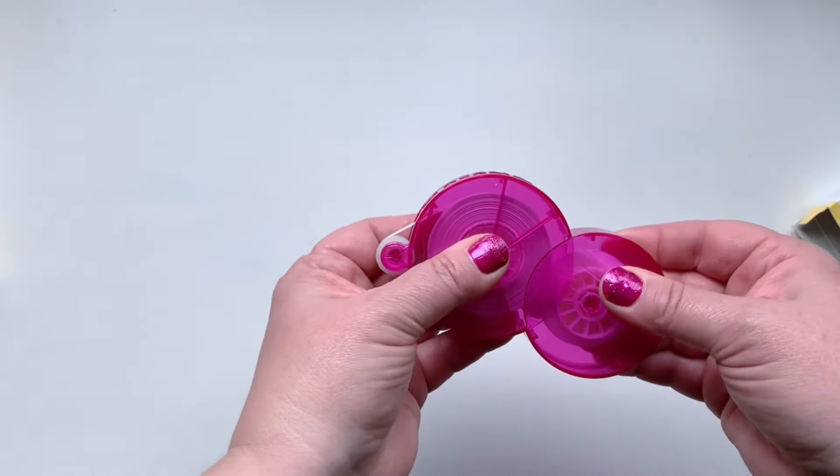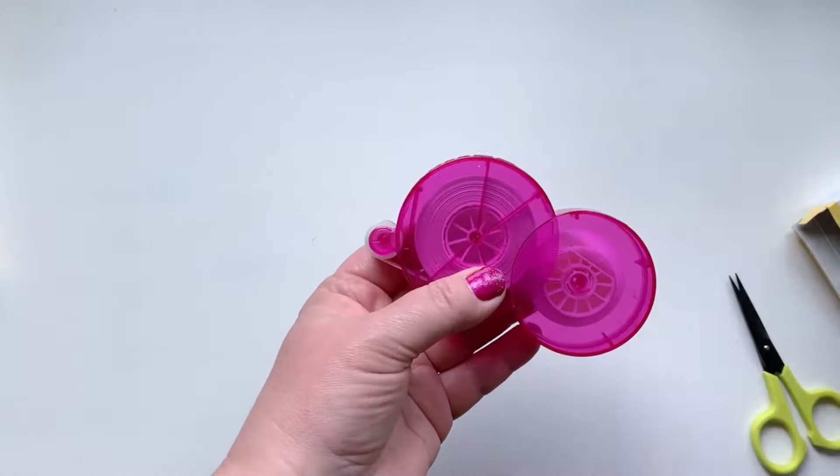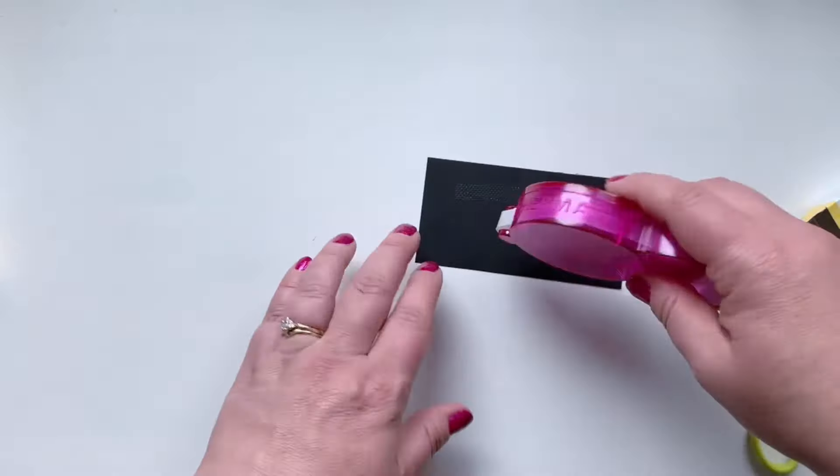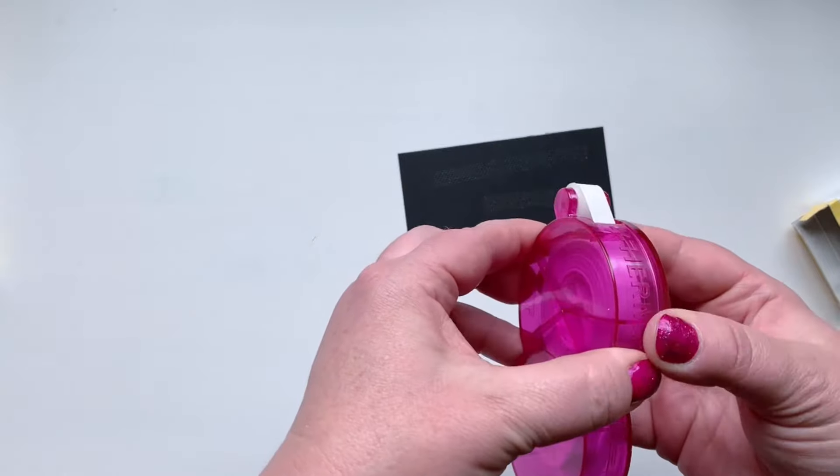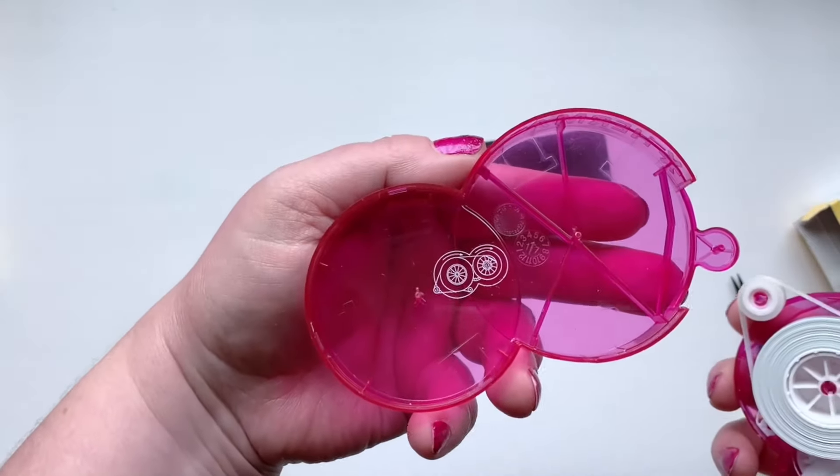And lastly, put your lid back on and snap it into place. Test this out and make sure that it glides out as smoothly as it did before. If it's not smooth, you might need to tighten the tape on the inside once more.